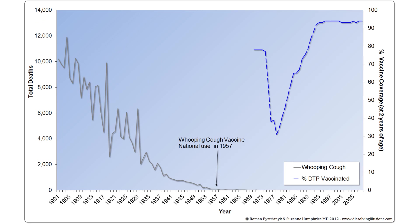In England, in the late 1970s, there was a scare that caused whooping cough vaccination rates to drop. Yet the number of deaths per year was near zero before the vaccine was even being used. And when vaccination rates dropped, there was no detectable increase in fatalities.